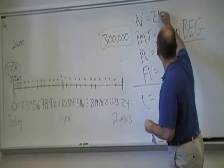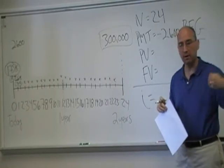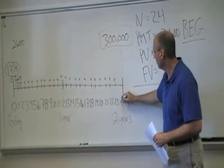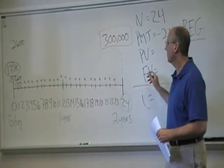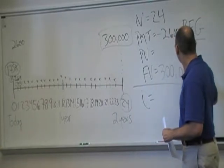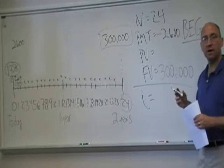How many payments are there? There's 24 in 24 periods from today, so zero to this point in time which is in 24 periods. She wants to have $300,000 and the present value,